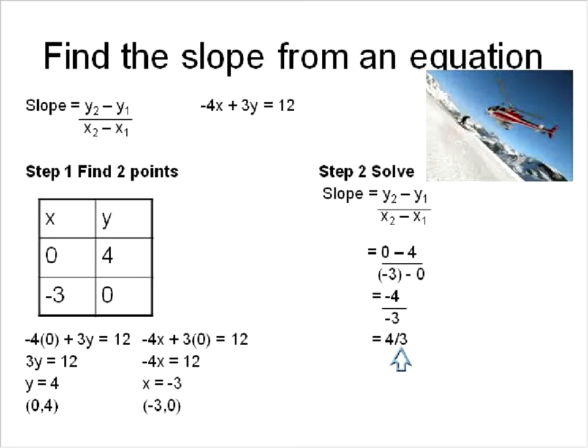A rise of 4 for every 3 it runs. A change in vertical, it'll go up 4, and it'll move to the right 3. That's what this is telling me, if I were to actually graph that line.